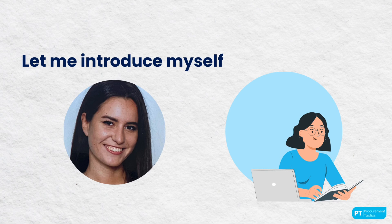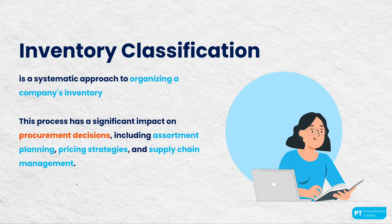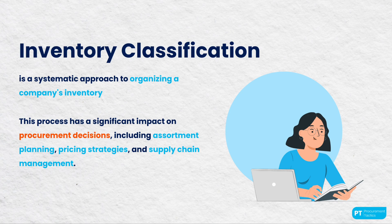In this lesson, we're going to unravel the essential aspects of inventory classification in procurement and category management. Inventory classification is not just a task, but a strategic approach crucial for effective inventory control and optimization. It is a systematic approach to organizing a company's inventory, and it is at the heart of category management in procurement. This process has a significant impact on procurement decisions, including assortment planning, pricing strategies, and supply chain management. Businesses typically categorize inventory into three main types: raw materials, work in process, and finished goods. Each of these categories plays a unique role in the production and sales processes.